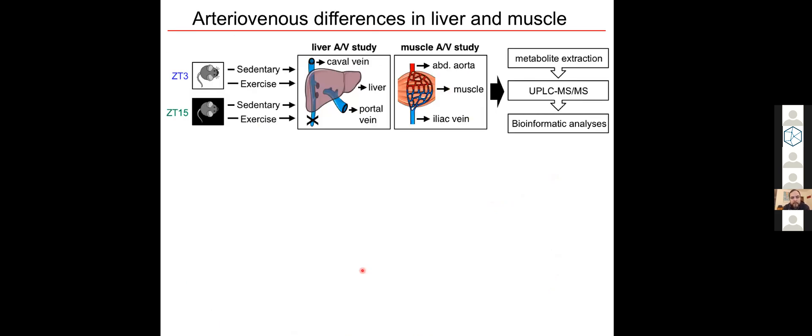So up until now, our interpretations were all based on relative differences in tissue metabolite steady state levels. To get a more functional idea regarding tissue uptake and production of these metabolites, we profiled blood metabolites across the liver and across hind limb muscles under sedentary conditions and after exercise performed at different times of the day.